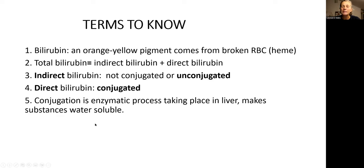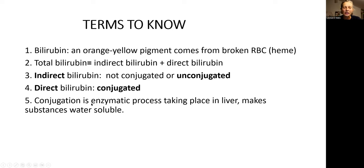Look at this slide and please memorize it because I'm going to use these terms. Bilirubin is the orange pigment that comes from red blood cells called erythrocytes and the pigment called heme. Total bilirubin is merely a sum of indirect bilirubin plus direct bilirubin. If indirect bilirubin goes up for different reasons because of different diseases, total bilirubin will also be elevated. Indirect bilirubin means it is not conjugated yet — on the laboratory work it will be marked as unconjugated bilirubin.